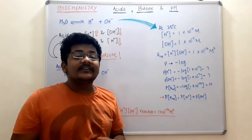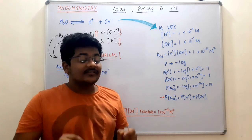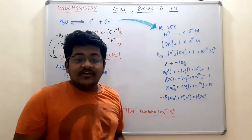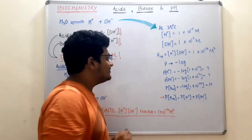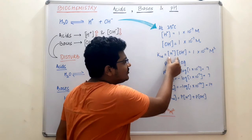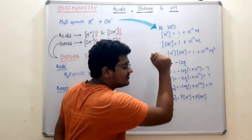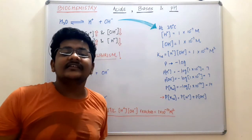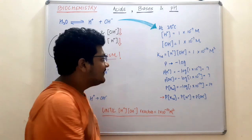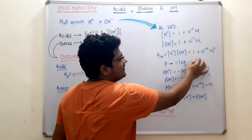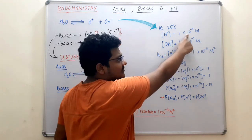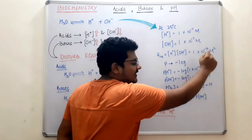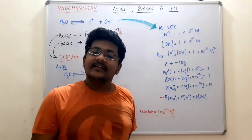There is a constant known as the ionization constant of water, denoted by Kw, which is the ionization constant of water under equilibrium conditions. It is the product of the concentration of hydrogen ions and the concentration of hydroxide ions. Multiplying 10⁻⁷ by 10⁻⁷ gives 10⁻¹⁴, and since both values are in molarity, the units become molarity squared.